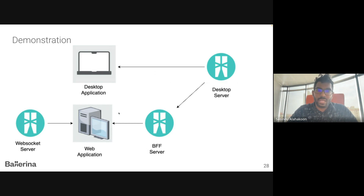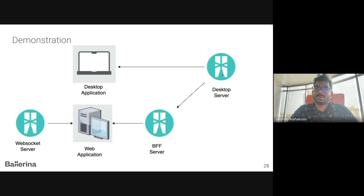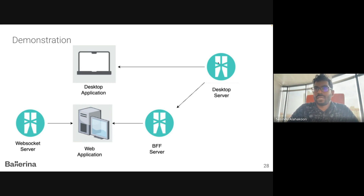They are not happy to create a separate back-end for the web application because it requires more resources. The problem is their existing desktop back-end server sends and receives large payloads, which are not suitable for a web application because of the high bandwidth requirement. The plan is to create a BFF server in the middle of the web application and the desktop server that converts these payloads into a format suitable for the web application.